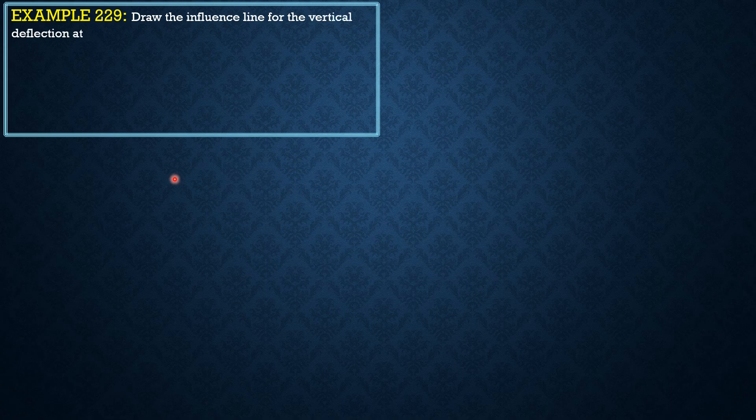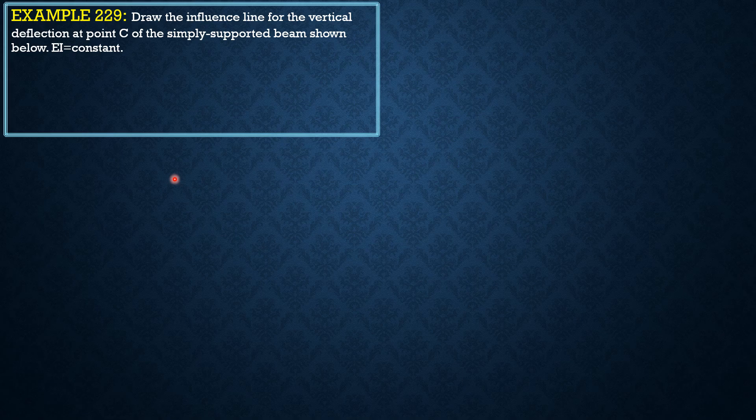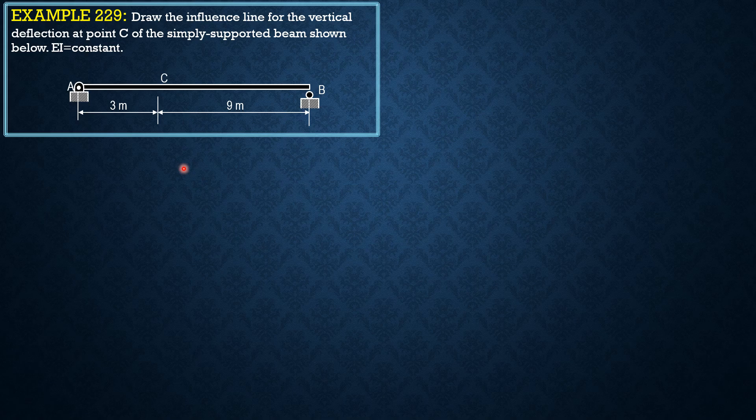Draw the influence line for the vertical deflection at point C of the simply supported beam shown below. EI is constant. Here's the given beam. We have to place the unit load over C, then this is the real beam.